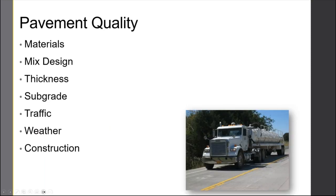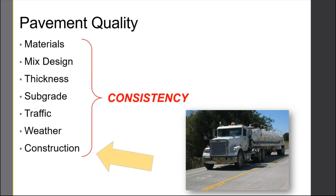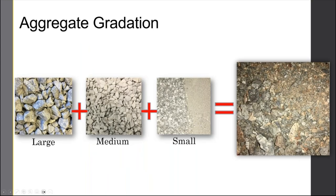In terms of pavement quality, we think about the materials, the mix design, the thickness, the subgrade, traffic, weather, and construction. We're obviously going to be focusing on the construction aspects. All the way through the process, consistency is going to be incredibly important. When you think about the materials going into that mixture, we're going to combine different sizes of aggregates — they mesh together and are basically glued together with that oil or binder. As we mix it and place it, all of the behaviors of these materials are going to affect that construction process to some extent.